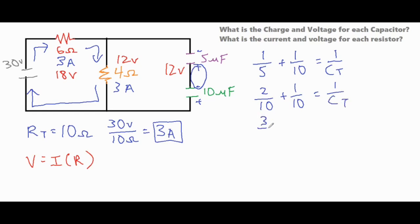And then that would be 3 over 10 equals the inverse. And then you can basically just cross multiply these two. And that would tell you that your total capacitance is 10 over 3 or 3 and a third.